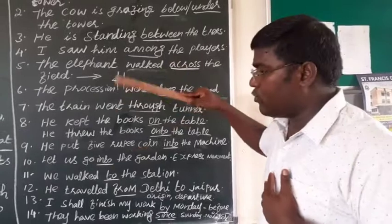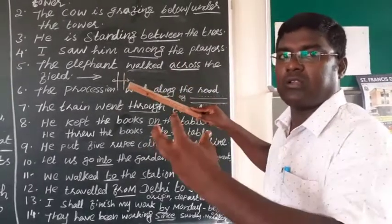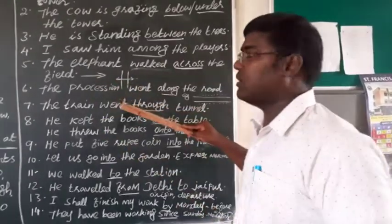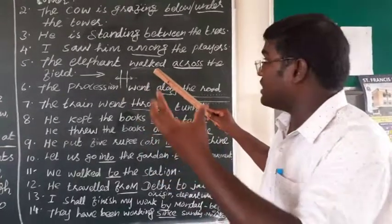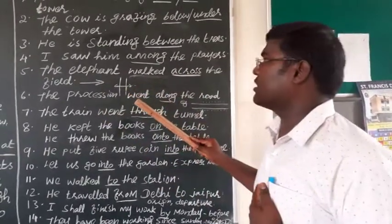Now, next sentence. I saw him among the players. Suppose more than two, too many are there. In that, you want to specifically mention something is there. So, I saw him among the players. More than two persons, more crowd is there, in that you see particular person.